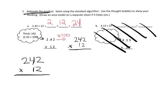242 times 12. And let's multiply. All right. So 2 times 2 is 4, 2 times 4 is 8, 2 times 2 is 4. And then we're going to put a 0 here because this 1 is really a 10. So 1 times 2 is 2, 1 times 4 is 4, 1 times 2 is 2. And now we can add.